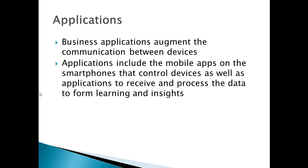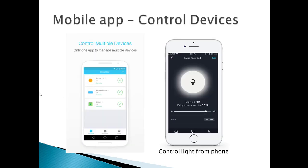The fourth layer refers to applications that collect the data and derive insights from the data. The applications include mobile apps on the smartphones that control devices, as well as applications to receive and process the data to drive analytics and insights. The applications could be mobile apps that enable you to control your smart home devices. A mobile application or a website page can be used to monitor and control devices.